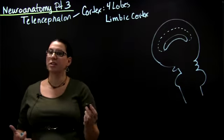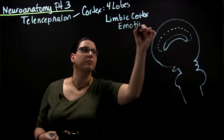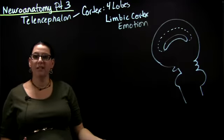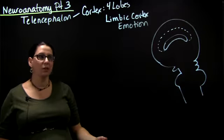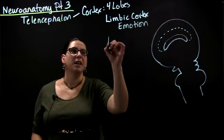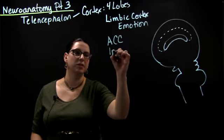The limbic system is important in emotion. And the limbic cortex is part of the limbic system. A couple of regions in the limbic cortex that we're going to talk about are the anterior cingulate cortex and the insular cortex.